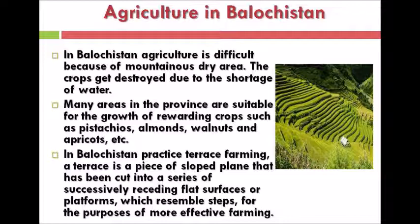Agriculture in Balochistan: agriculture is difficult in Balochistan because of its mountainous, dry terrain. Crops get destroyed due to shortage of water. However, many areas in the province are suitable for the growth of rewarding crops such as pistachios, almonds, walnuts, and apricots. In Balochistan, farmers practice terrace farming — a terrace is a piece of sloped land that has been cut into a series of successively rising flat surfaces or platforms resembling steps, for more effective farming.